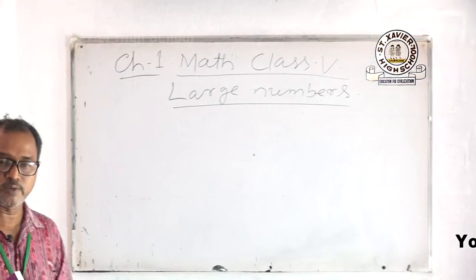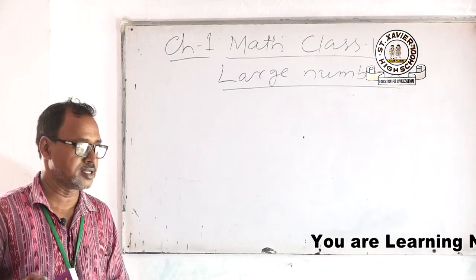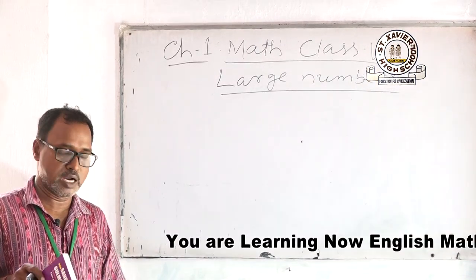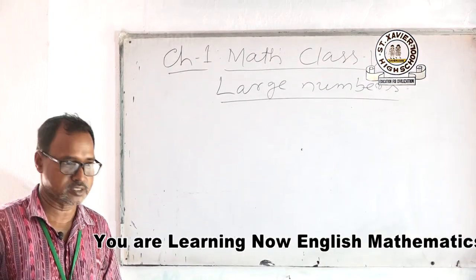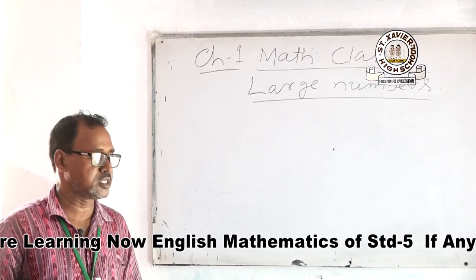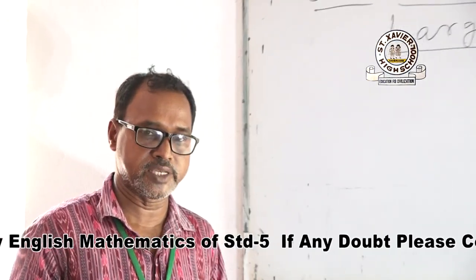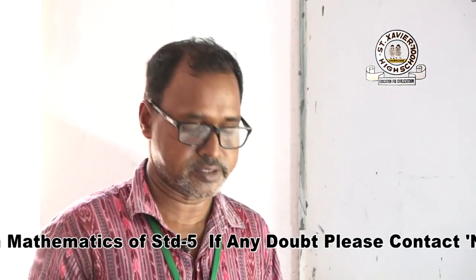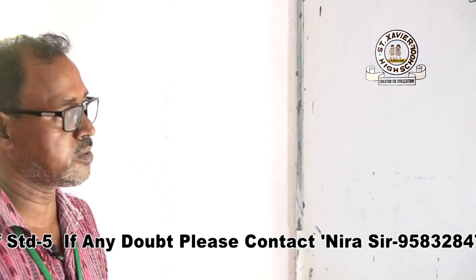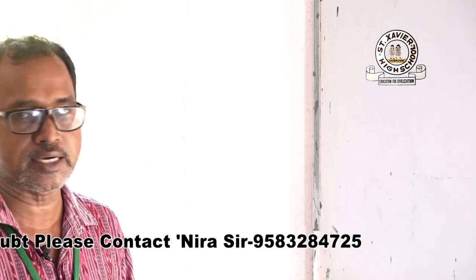Good morning students, it is your math class. You are in standard 5 and you have already learned so many topics. In standard 4 you learned about 3 to 4 digit numbers — the 4-digit greatest number. You also learned the 5-digit smallest and greatest numbers. Here in this chapter we have to learn 6-digit, 7-digit, and 8-digit small to greatest numbers.